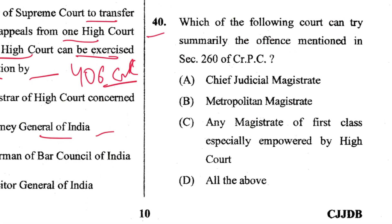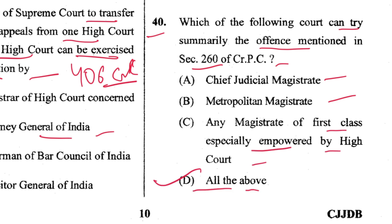Question 40: Which court can try summarily the offences mentioned in Section 260? Chief Judicial Magistrate, Metropolitan Magistrate, any Magistrate of first class specially empowered by the High Court — all of the above. D is the answer, as mentioned in Section 260 itself.